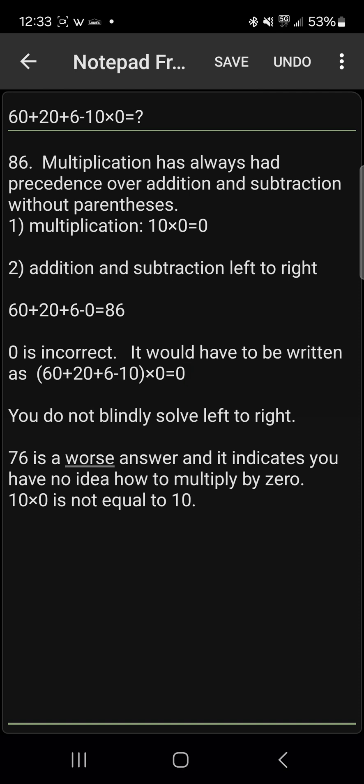76 is another answer I've seen a few people give. Honestly, that's a worse answer than 0. At least the people getting 0 have some idea of how to multiply by 0. But to get 76, you're subtracting 10 at the end because you believe that 10×0=10.